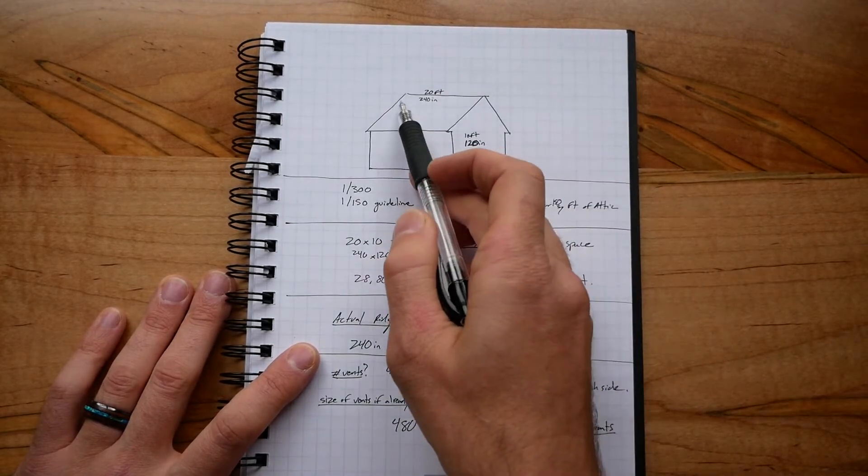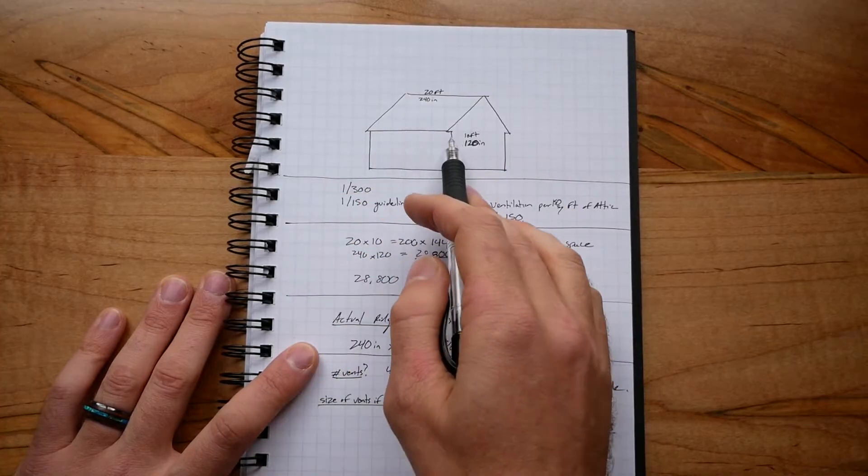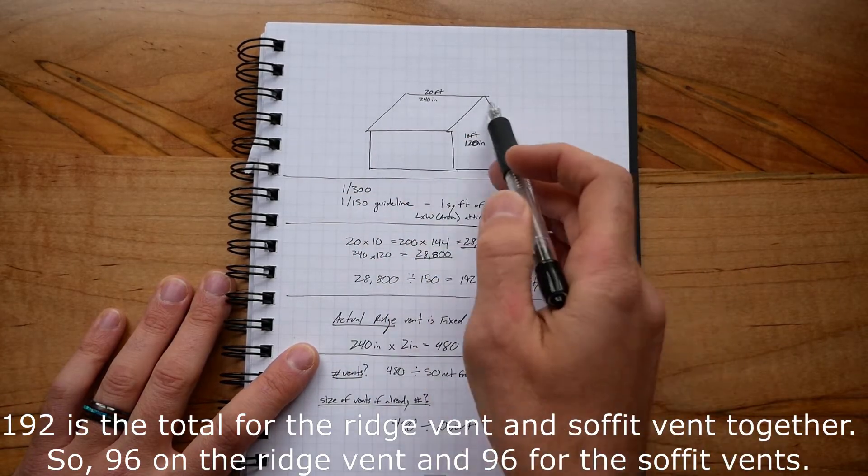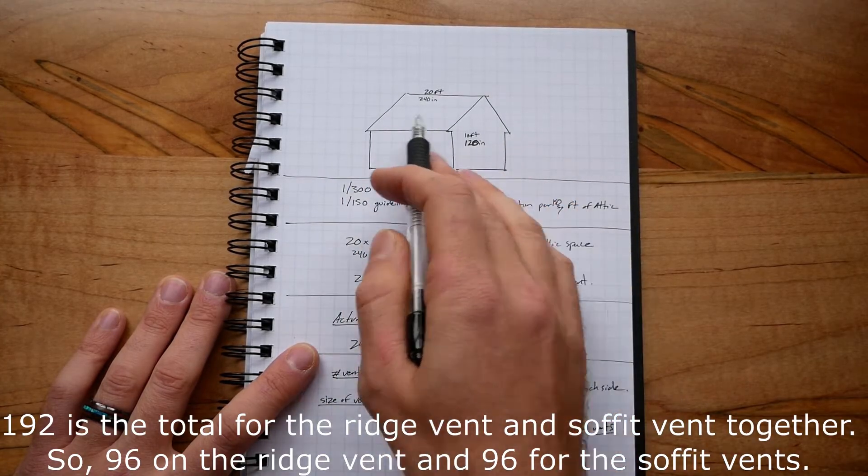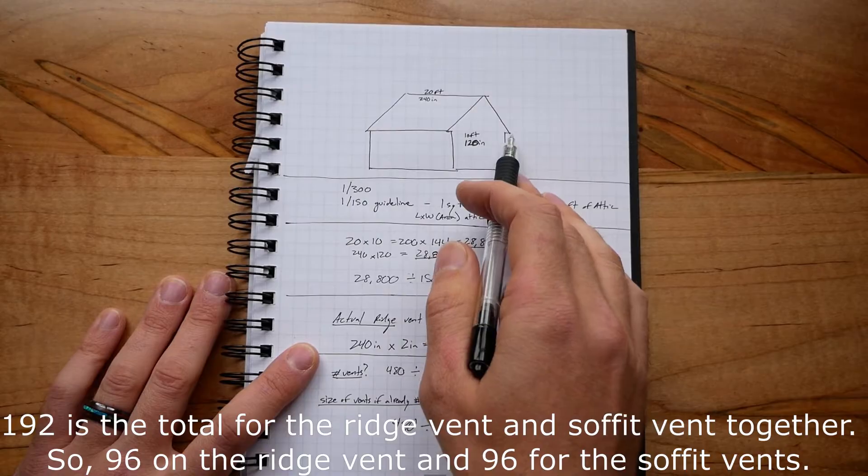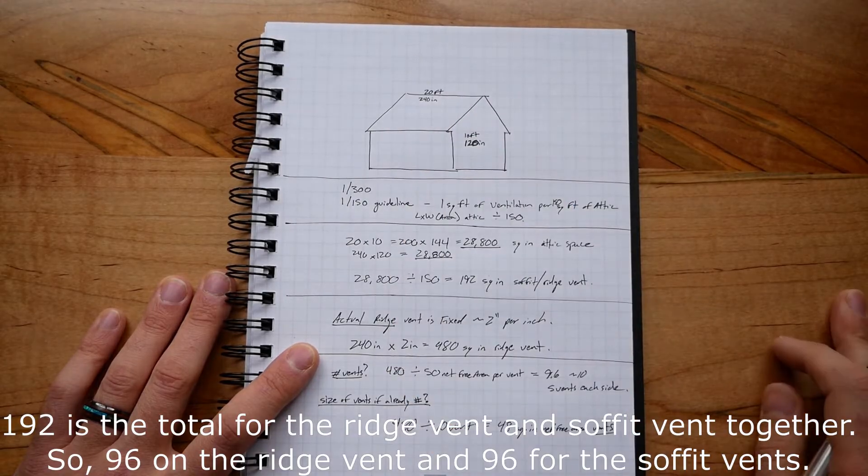The ridge vent area would be up here, and the soffit vent area would be right here. It would be 192 on the top, and then 192 split in half on each side because each side would be providing air up to that single ridge vent.